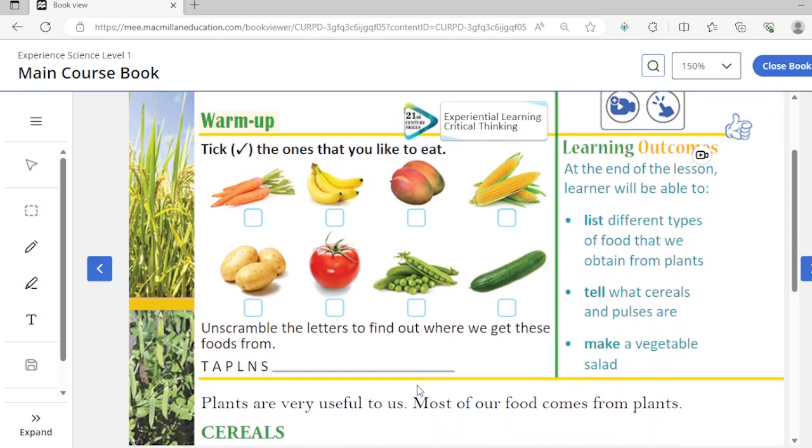In this chapter we are going to learn different types of food. We will learn about cereals and pulses, and you will learn to make a vegetable salad. Before we learn this, we have got a set of pictures here. The food you like, you will have to click on it, right?